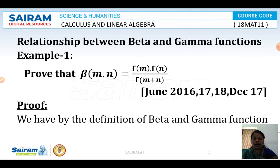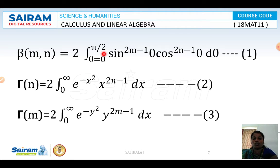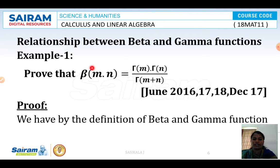First, by the definition of beta and gamma functions, using the general definition and substituting x equals sin squared theta, we get: beta of m comma n is equal to 2 times the integration with theta varying from 0 to pi by 2 of sin power (2m minus 1) theta into cos power (2n minus 1) theta into d theta. We mark this as equation number 1.